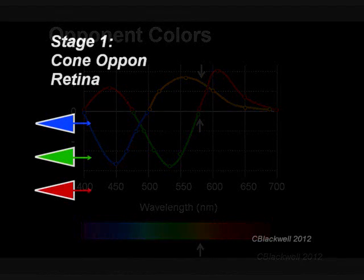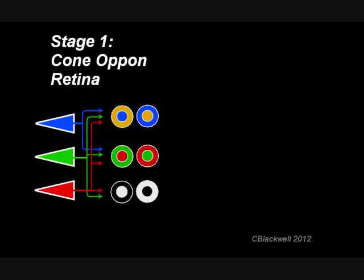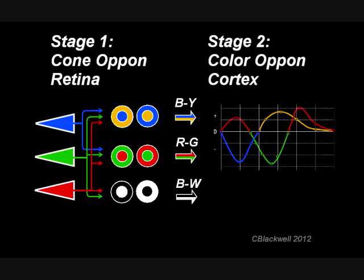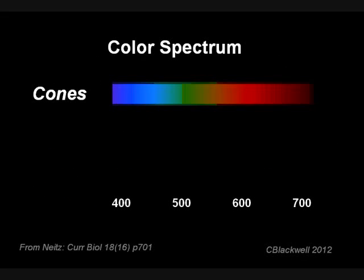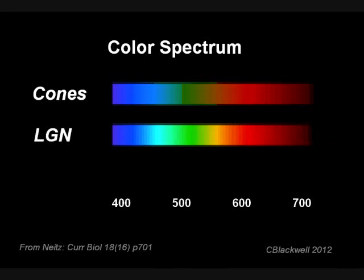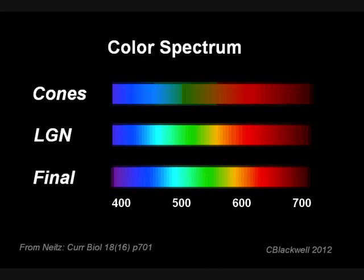Starting with the cones, input into the ganglion cells makes the first separation into blue-yellow and red-green orientation — these are the cone opponent channels. When this was first discovered, it seemed this would be the mechanism for color opponency. Unfortunately, it's not that easy. Experiments show this output does not match our final color experience. There's another step in color processing that occurs in the cortex that yields color results that do match our perceptions. If color processing was only by the three cones, this is approximately what the spectrum would look like. After cone opponent processing, this is what arrives at the lateral geniculate nucleus — most of the colors are there, but they are not in quite the right places. After the final stage of processing, the colors end up in the places we are accustomed to seeing them.